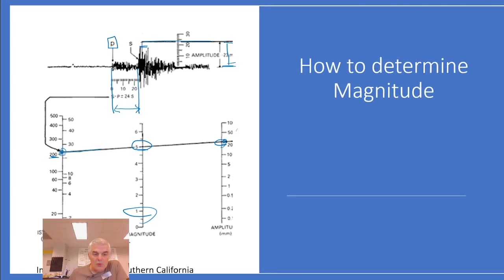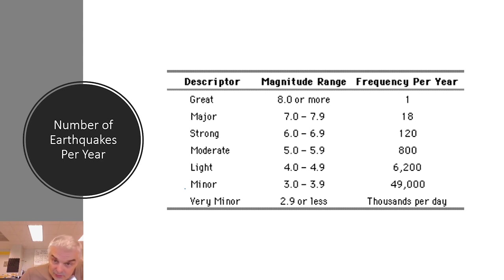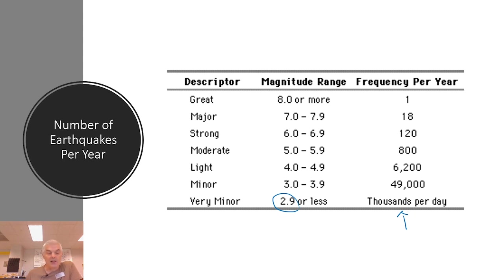They use something called the Richter scale to determine how big the earthquake is. Here are our earthquakes on a one to ten scale. If the earthquake is 2.9 or less, there are thousands of those every day — about 49,000 a year.